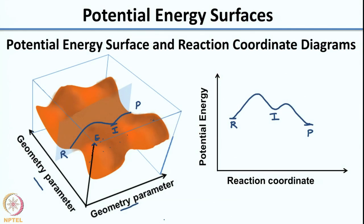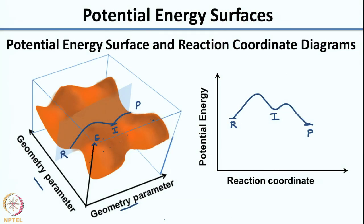In week 2, we moved on to representing reactions in terms of energy using a reaction coordinate. I introduced the concept of a potential energy surface — where on one axis you have energy and on the other a geometry parameter describing how bonding changes occur. The reaction coordinate diagram is a slice of this potential energy surface, shown as a cross-section cutting through the surface.